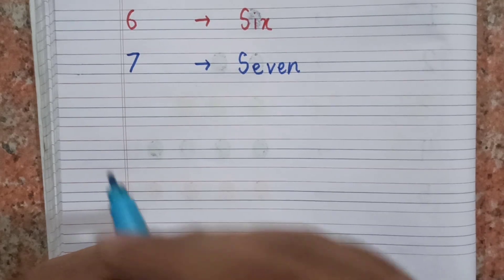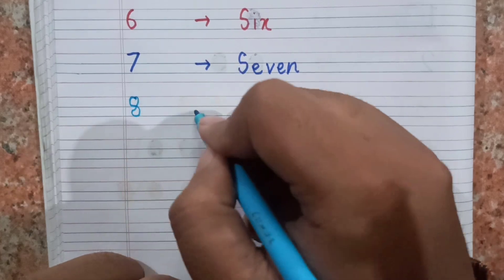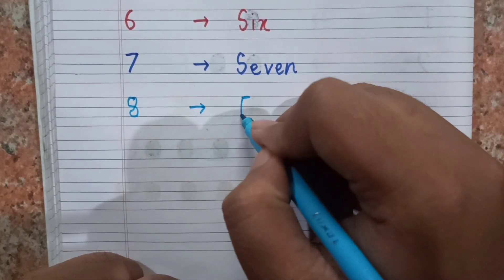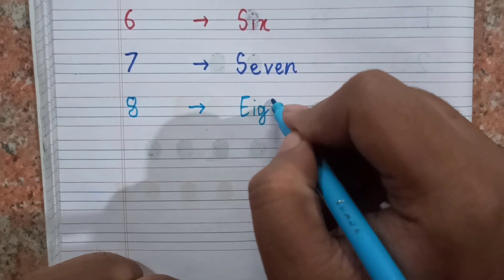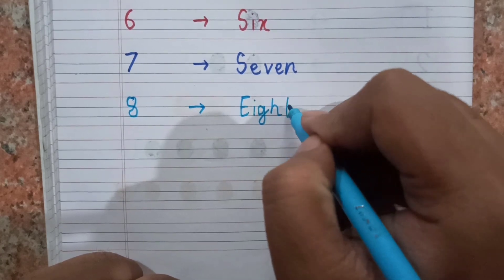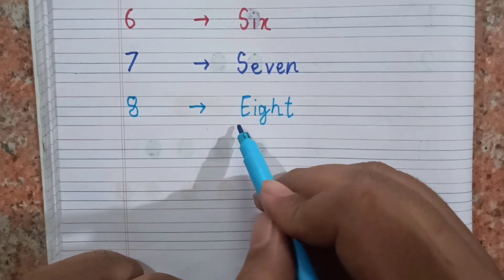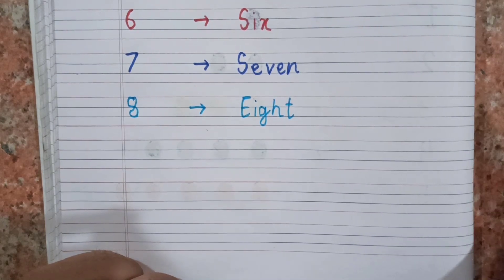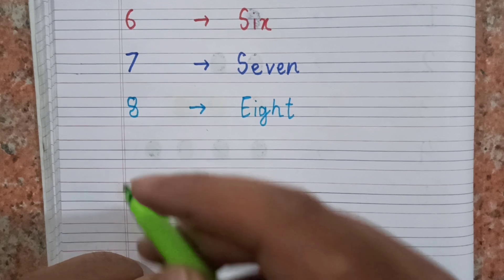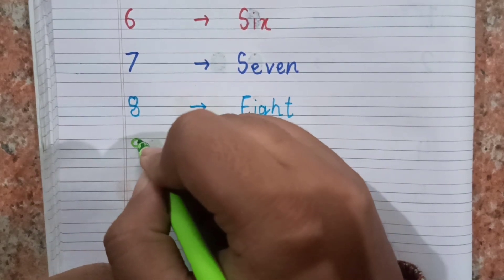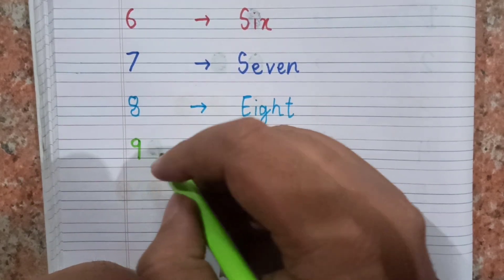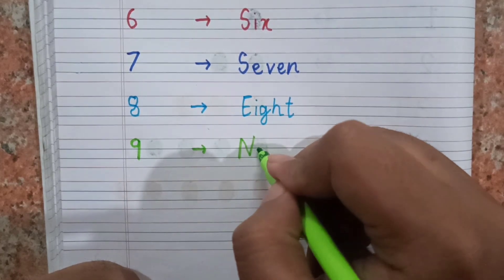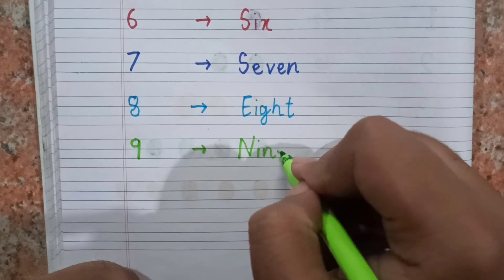After seven, the next number is eight. This is eight, and the spelling of eight is E I G H T. Eight. After eight, the next number is nine. This is nine, and the spelling of nine is N I N E. Nine.